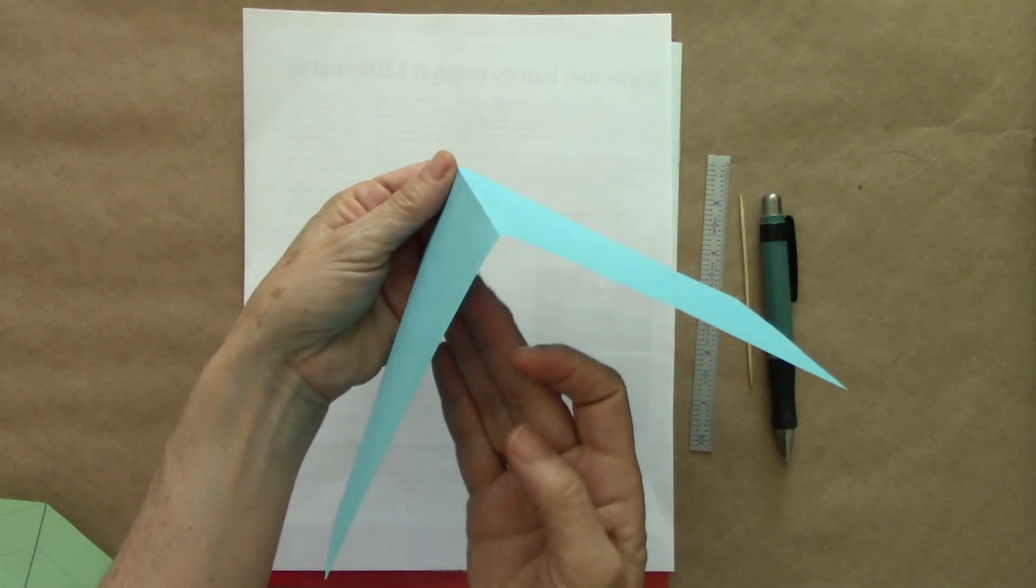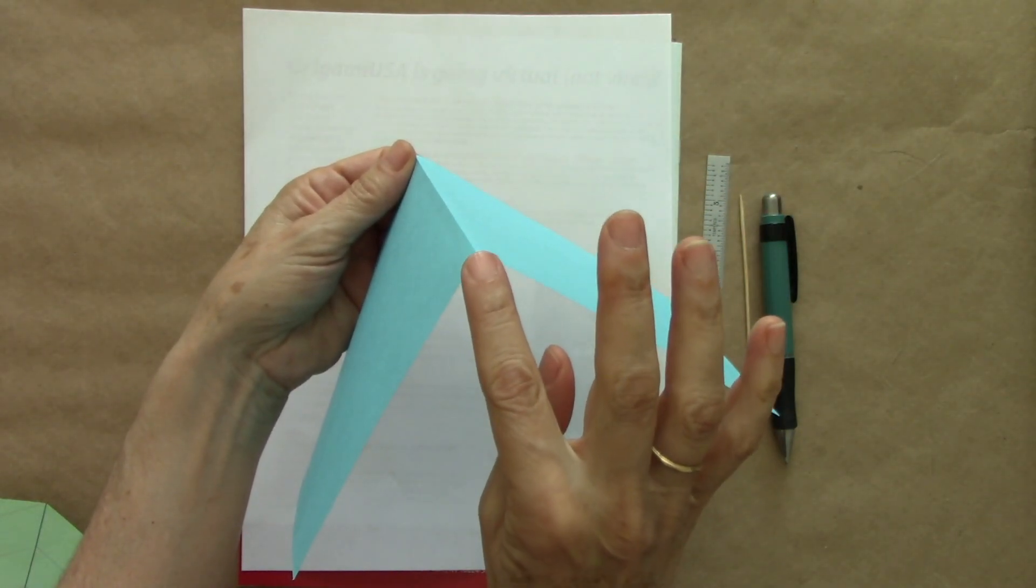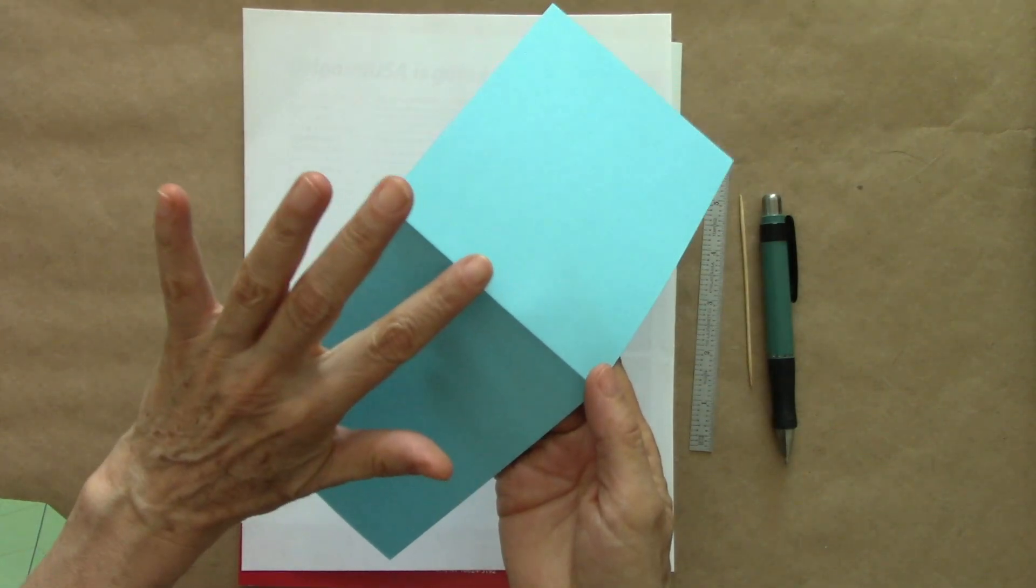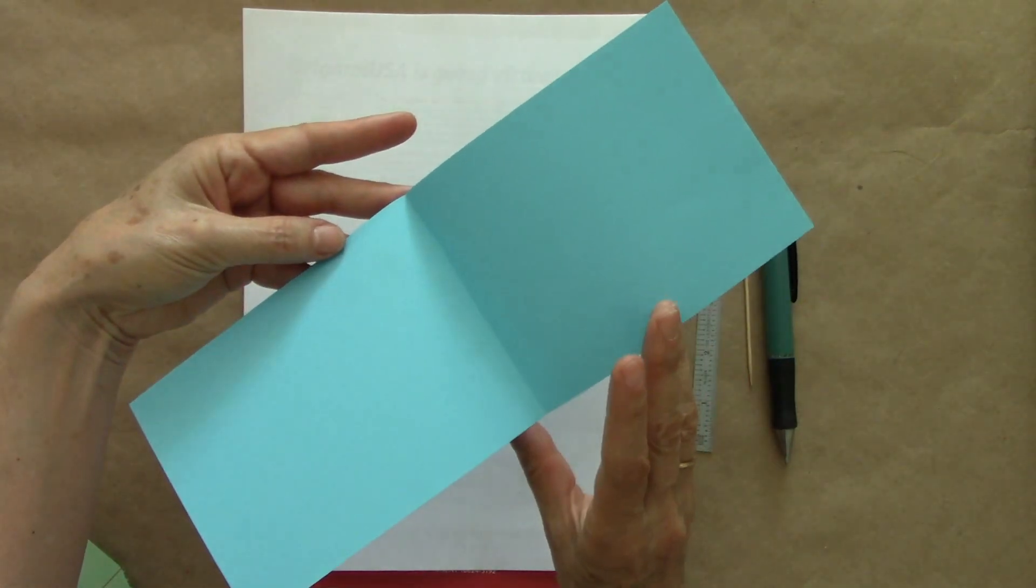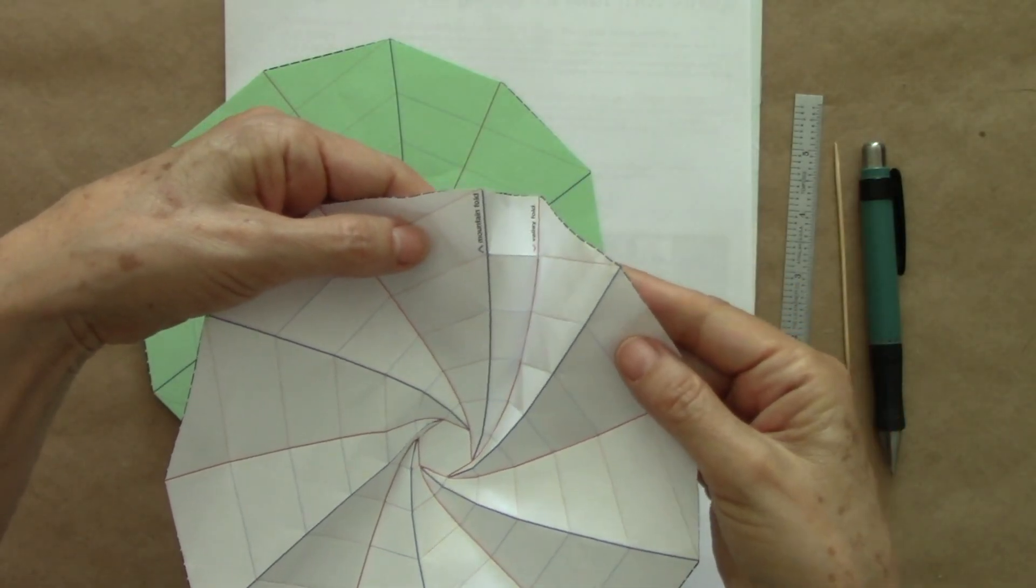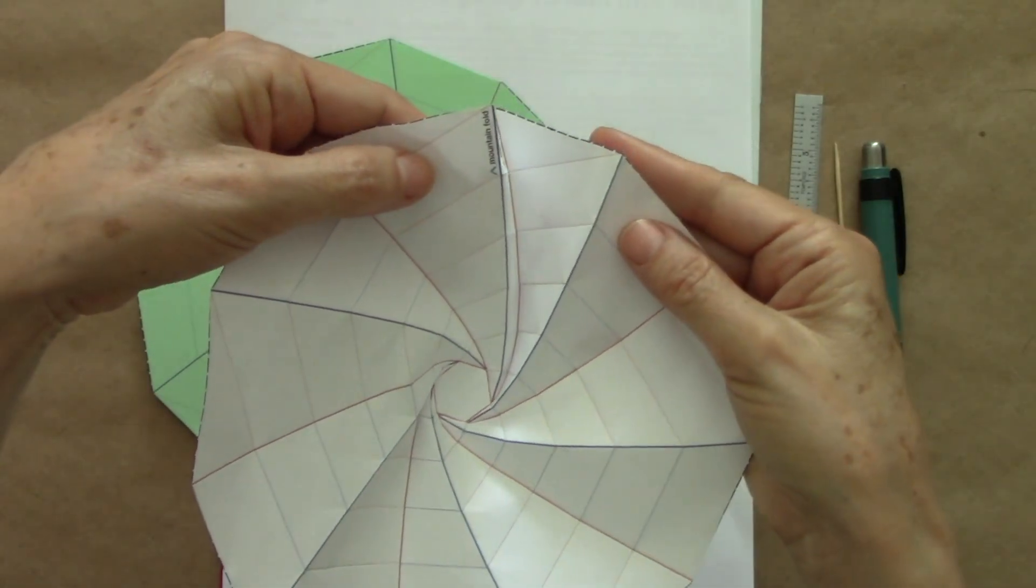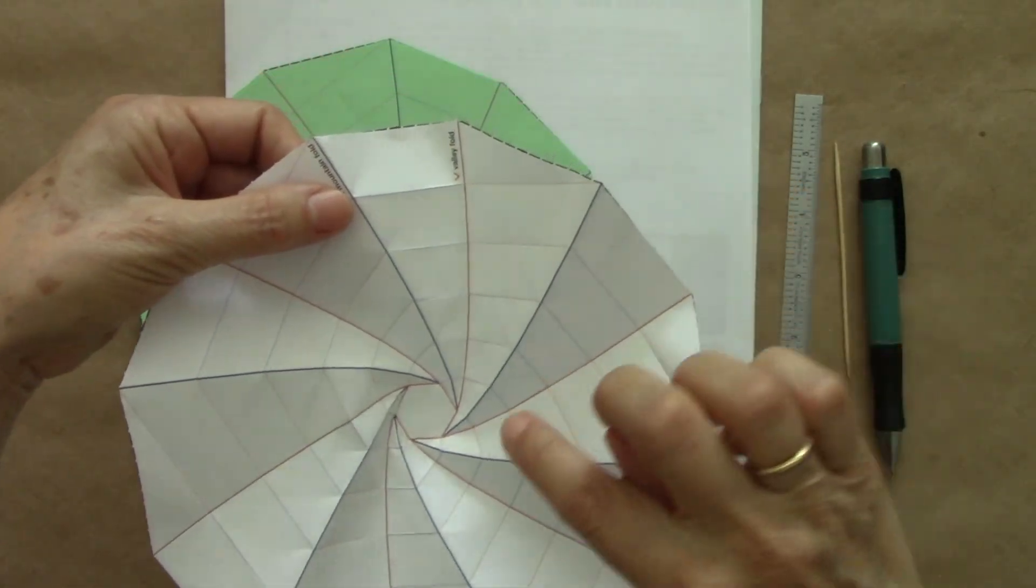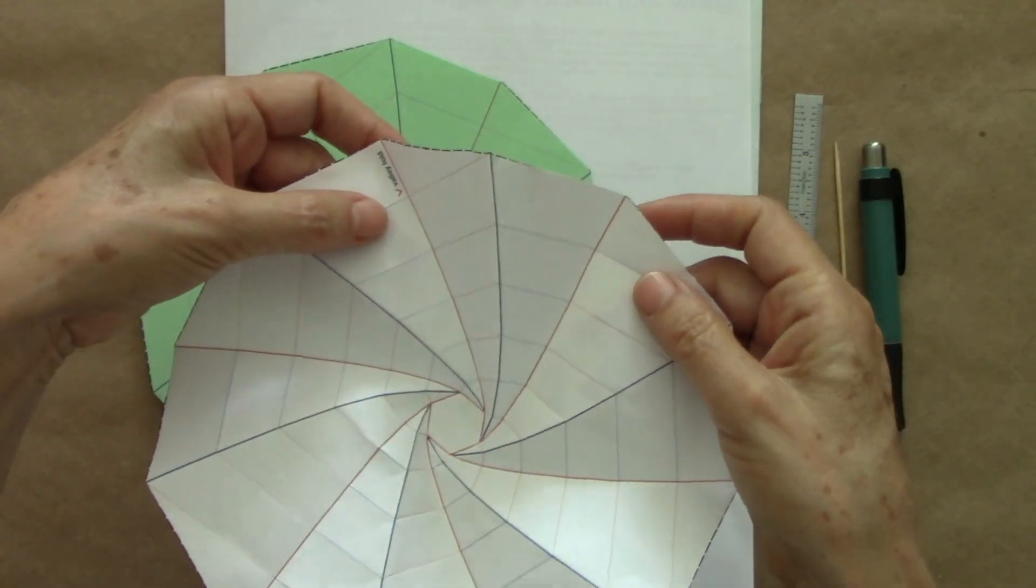On the other side of the paper, the same crease is a mountain fold. If we sit sideways, we can see like the summit of a mountain. So the red lines will be valley folds, and the blue lines will be mountain folds.